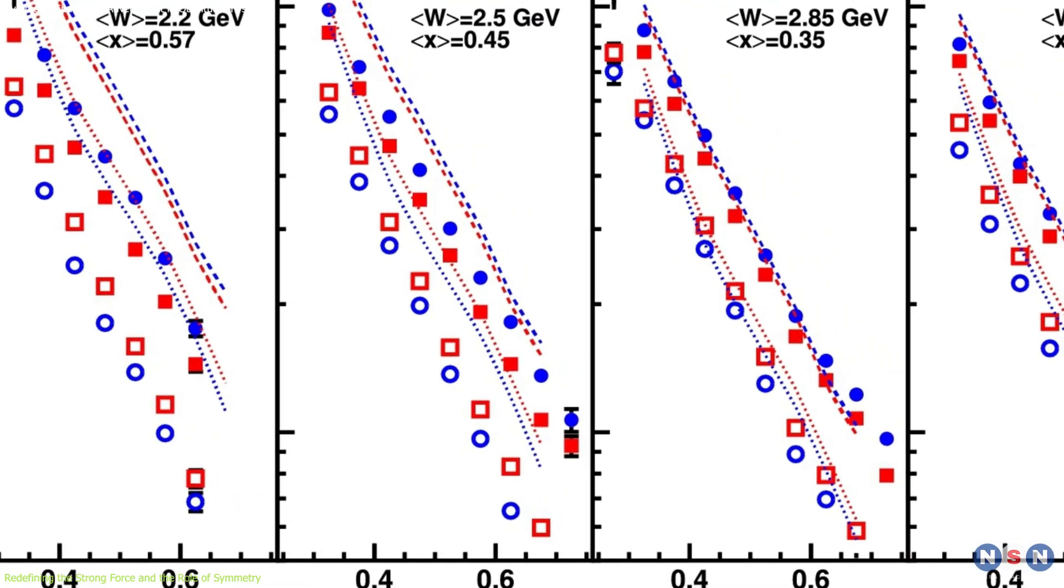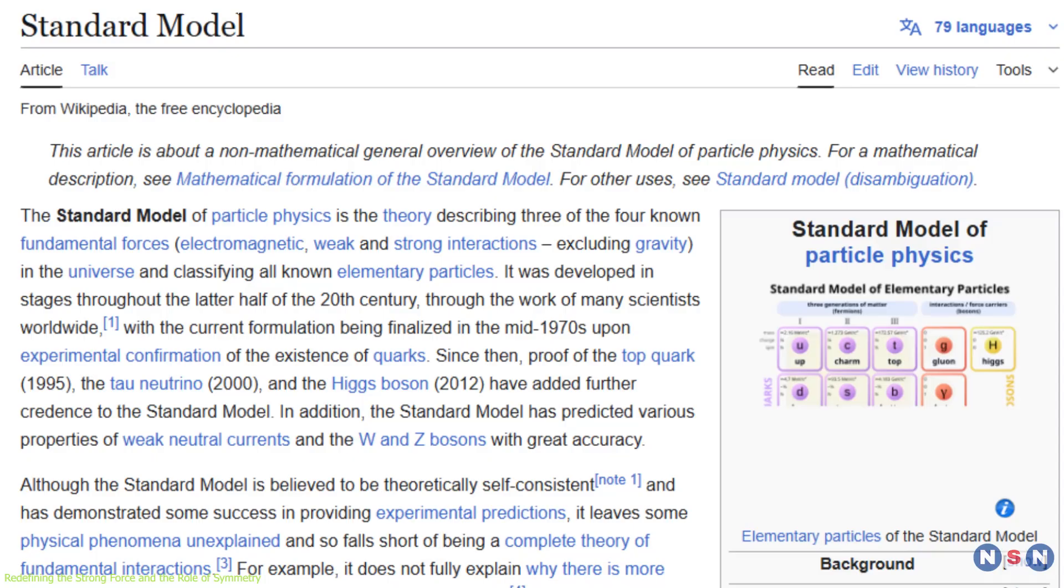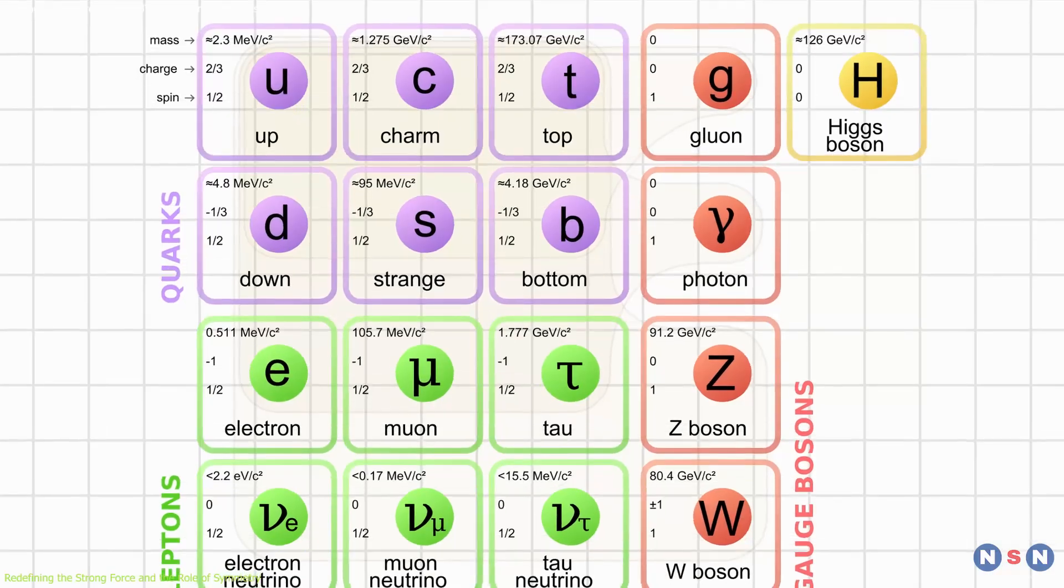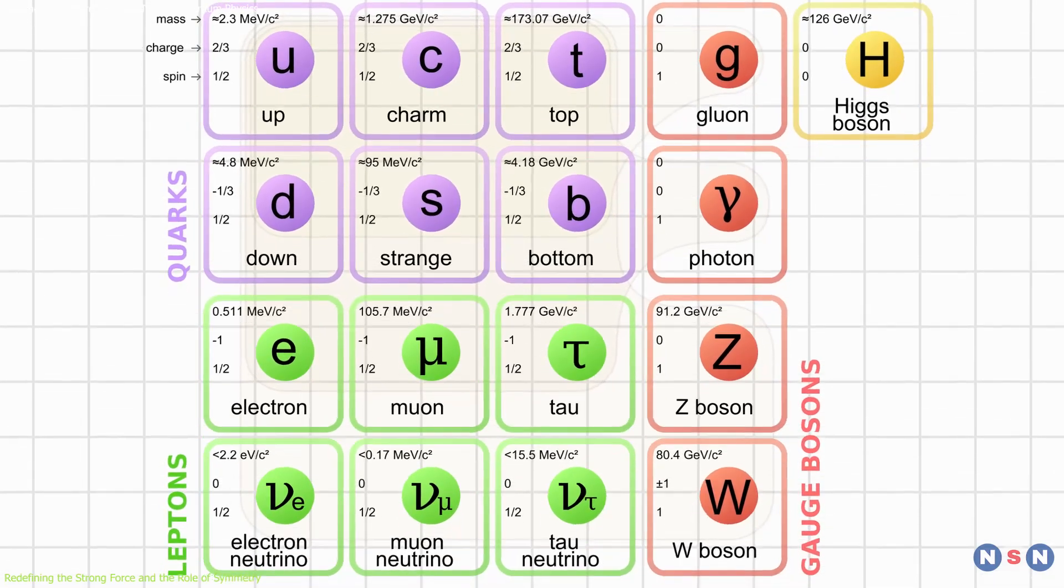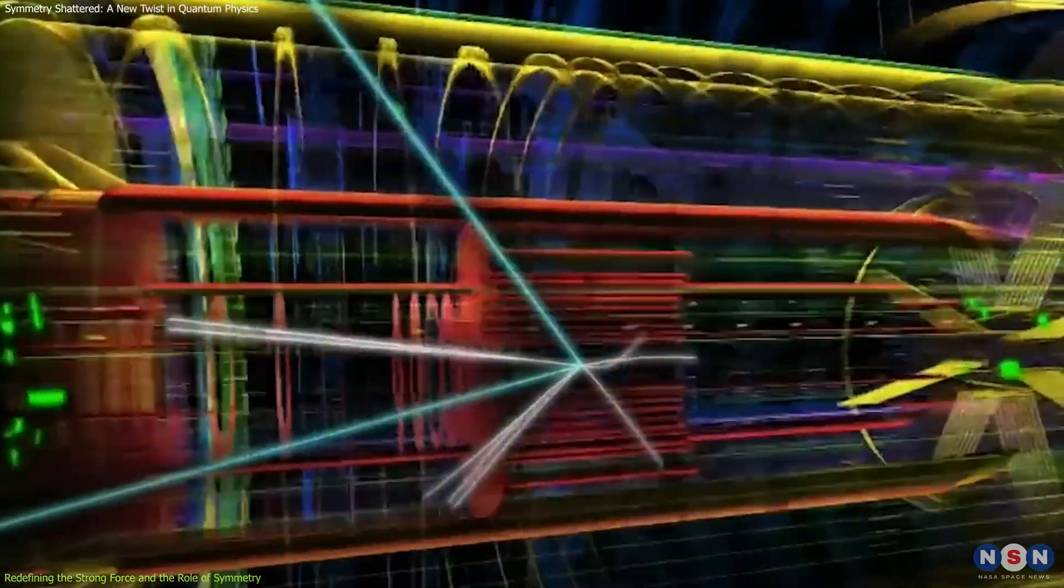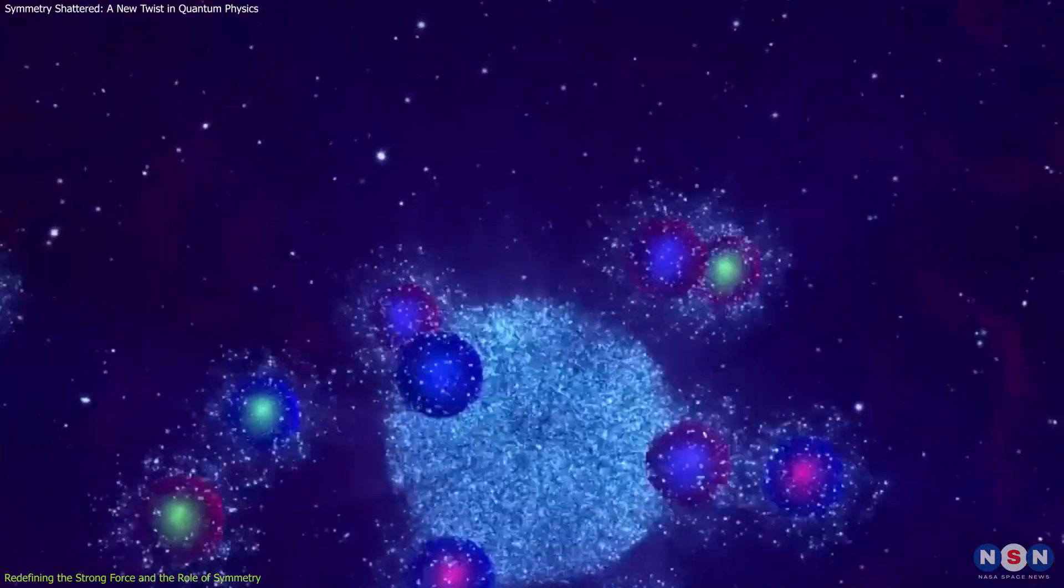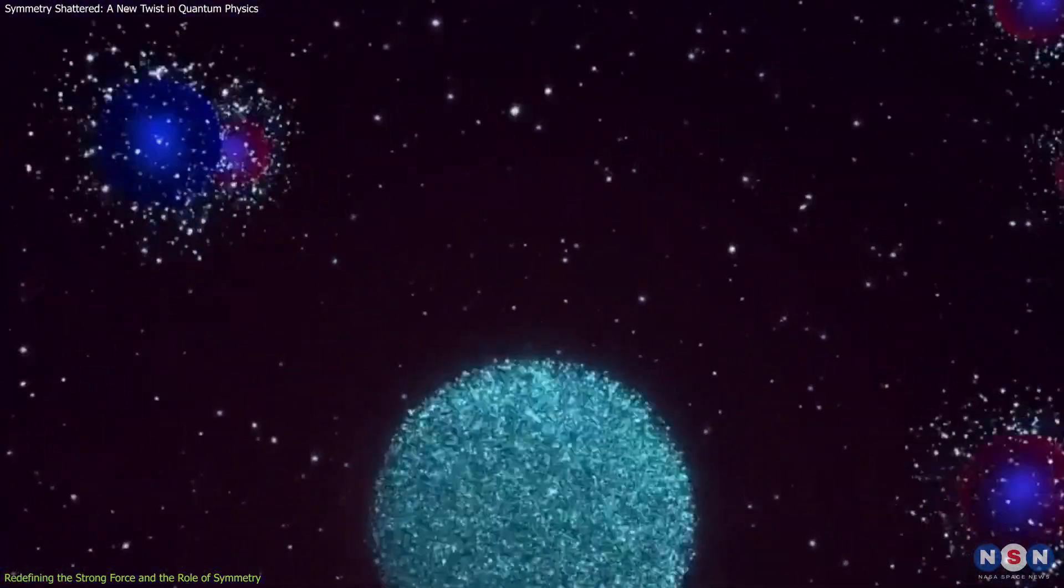These findings feed directly into broader concerns about the completeness of the Standard Model of particle physics. While this model elegantly explains most known particles and interactions, except gravity, it relies heavily on symmetries: gauge, flavor, and parity among them.